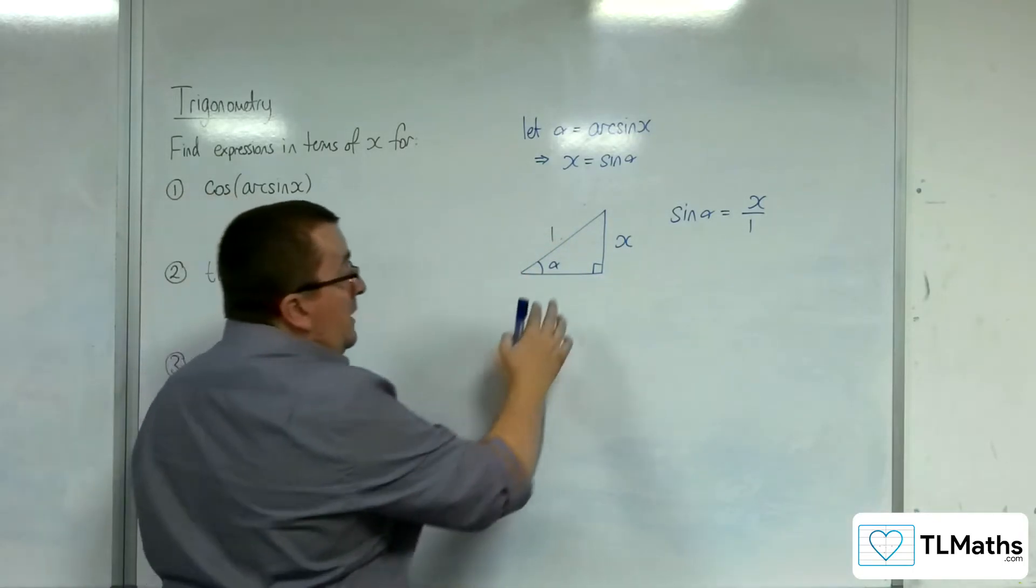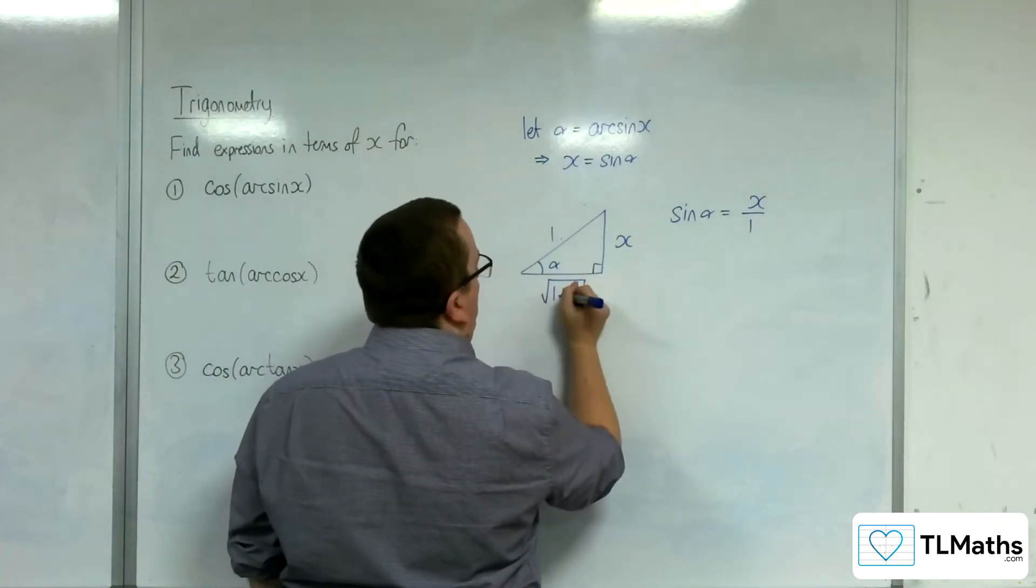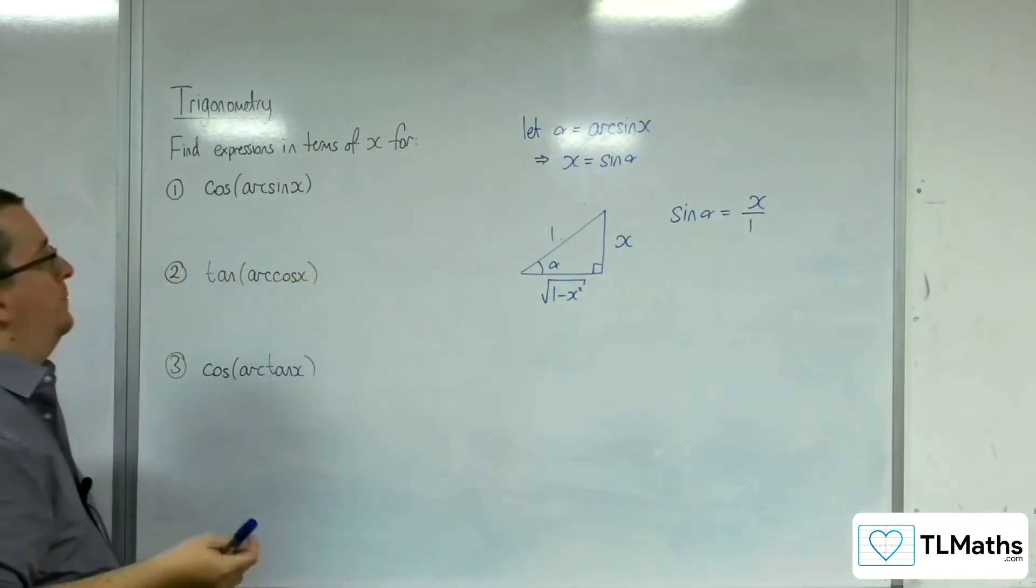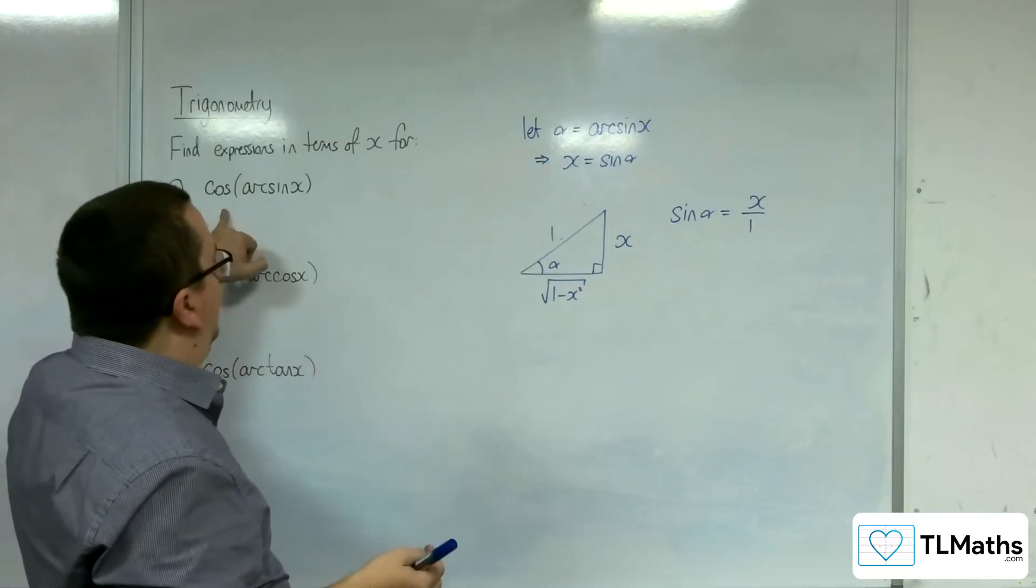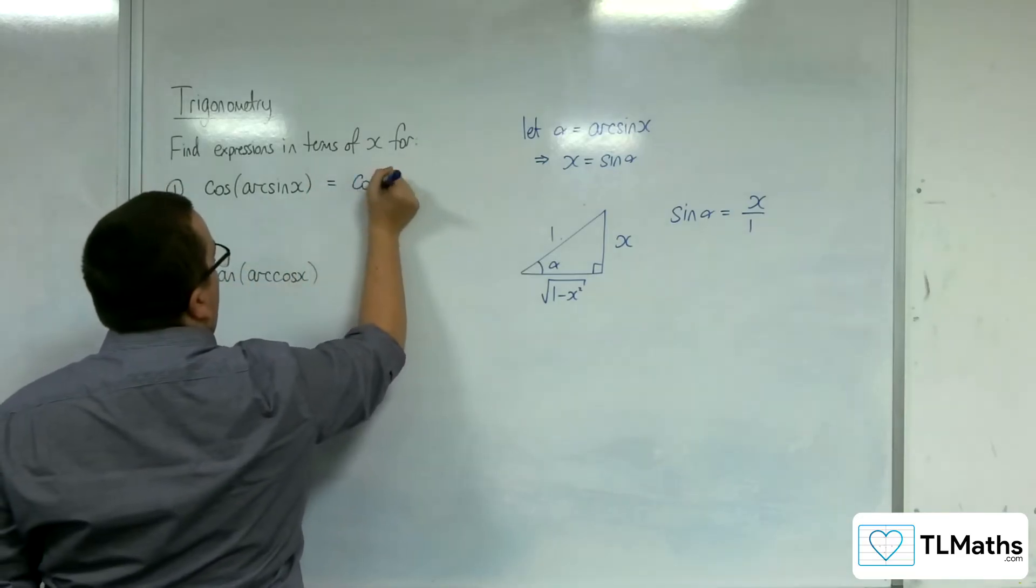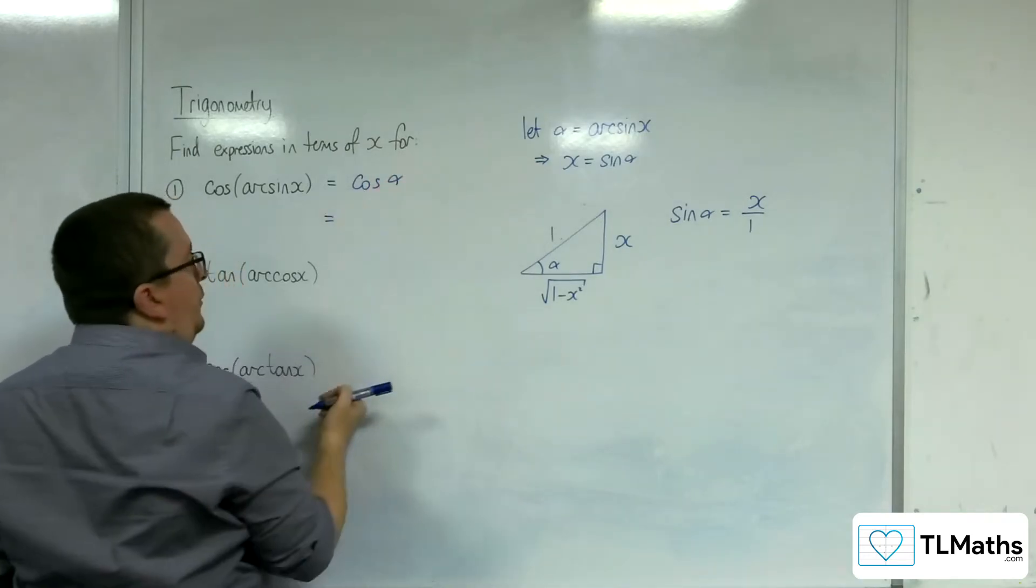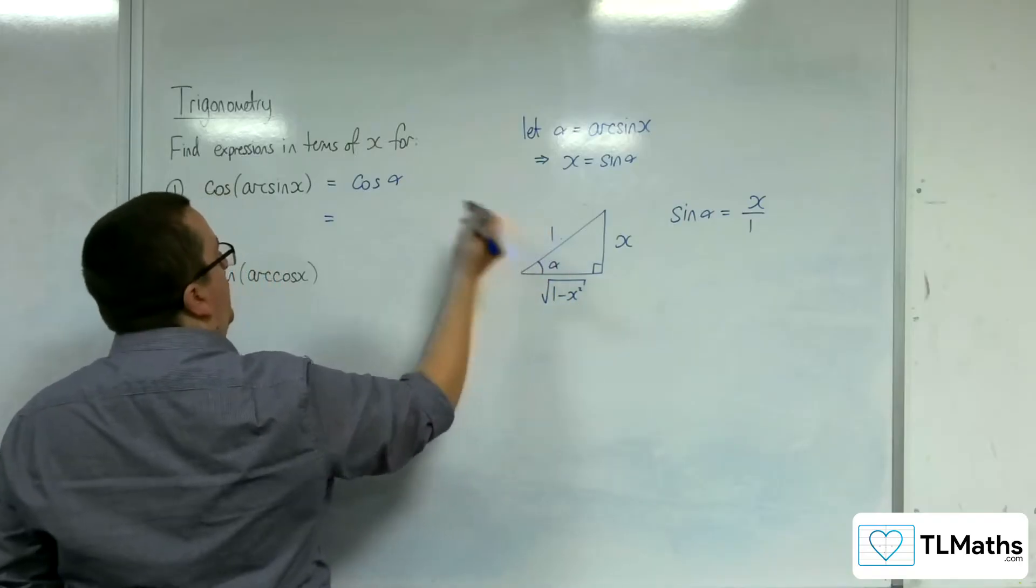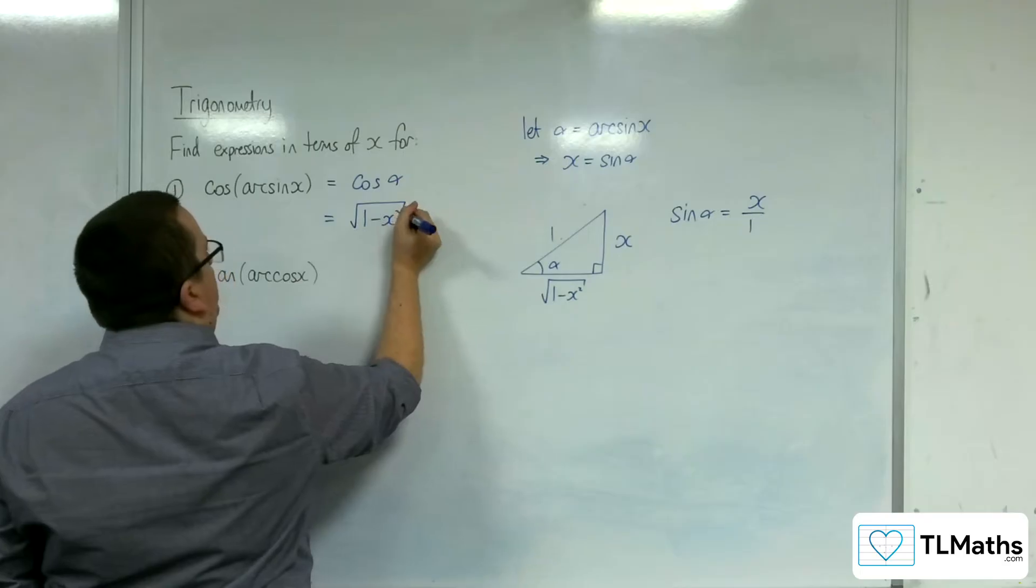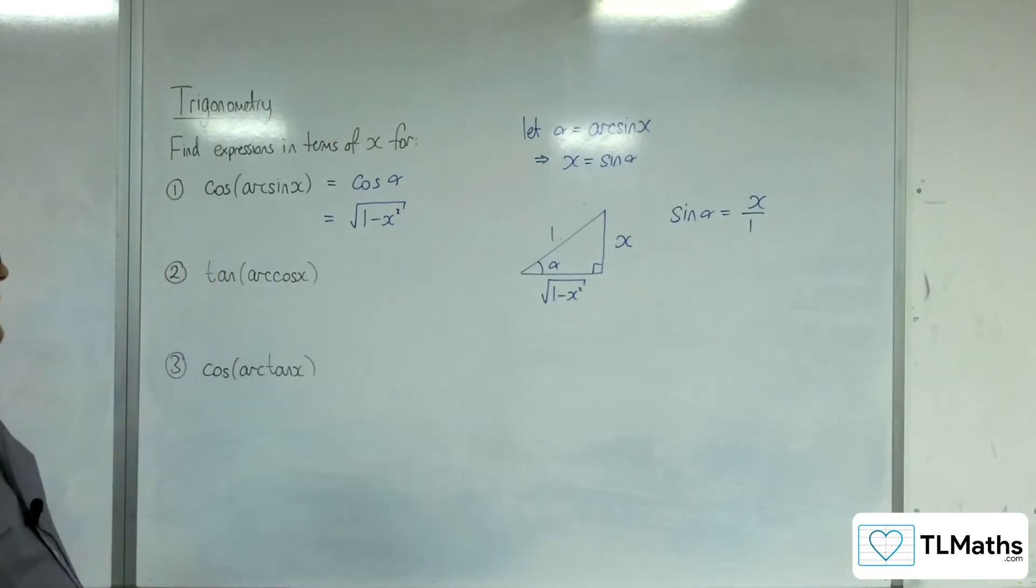So the missing side that we have here is the square root of 1 minus x squared, using Pythagoras. So if I'm looking for cosine of arc sine x, this is cosine of alpha. Cosine of alpha is the adjacent over the hypotenuse, and so we get the square root of 1 minus x squared.